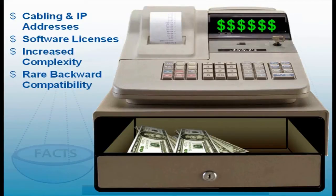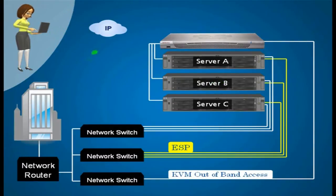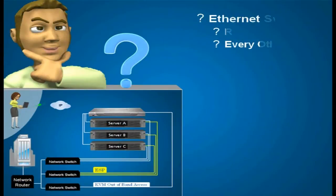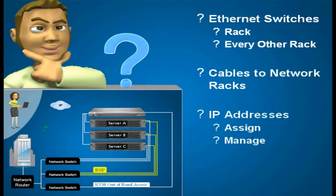To mimic a KVM network's out-of-band functionality, the ESPs must be connected to separate Ethernet switches and assigned IP addresses. Will you be locating the Ethernet switches in every rack or every other rack, or will you be sending all those cables over to the network racks? Since you'll have hundreds or thousands of ESPs that you might need to access, you'll need to assign and manage all those IP addresses. Even more expensive is the need for software packages to manage quick access to all those connections.